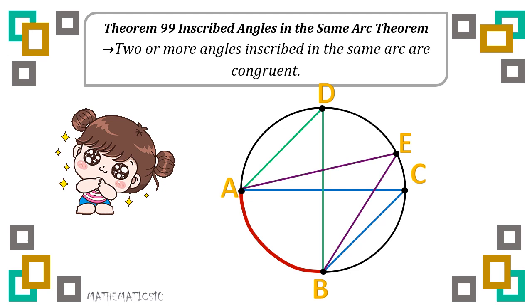Based on theorem 99, if the angles intercept the same arc, then they are considered congruent. So for example, if the measure of angle BCA is 70 degrees, therefore angle AEB and angle ADB are 70 degrees as well.